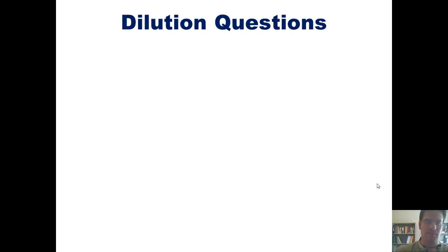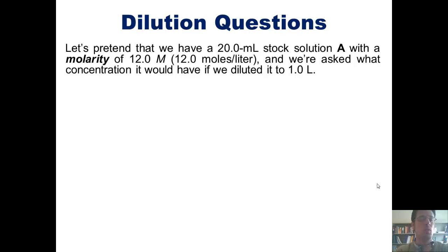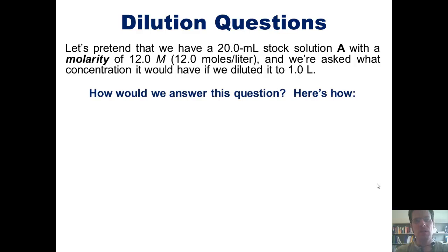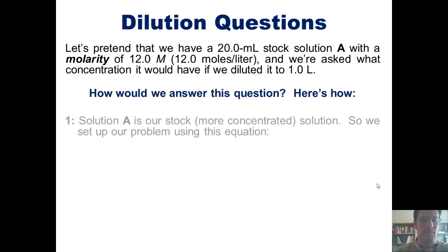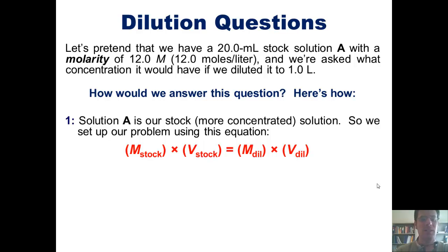Here's another example. Let's pretend that we had a 20 milliliter stock solution A with a molarity of 12 molar, or 12 moles per liter, and we're asked what concentration it would have if we diluted it to 1 liter. We have to remember that solution A is our stock or more concentrated solution, and we set it up using our old reliable equation: M-stock times V-stock equals M-dill times V-dill.